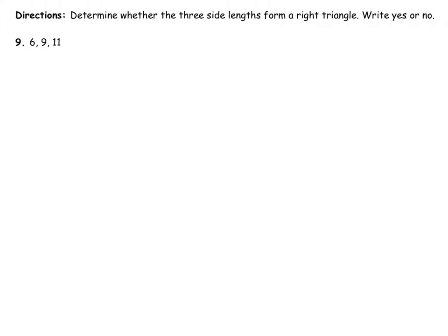Determine whether the three side lengths will form a right triangle. So this is the converse of the Pythagorean Theorem. If A squared plus B squared equals C squared, then we have a right triangle.